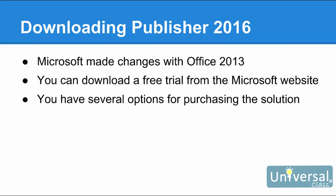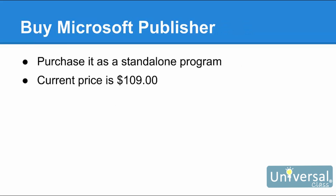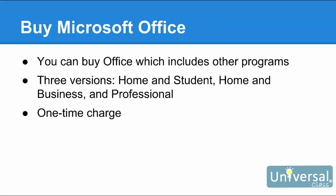You don't need a credit card to try the software. If you want to purchase the software, Microsoft now gives you several choices. You can purchase Microsoft Publisher as a standalone program by going to the Microsoft website. At the time this course was created, the price was $109. You can also buy Microsoft Office, which includes other Office programs such as Excel. The price varies depending on what version you wish to purchase. There are three versions: Home and Student, Home and Business, and Professional. As with other versions of Office, it's a one-time charge and the software is yours to use as long as you wish.